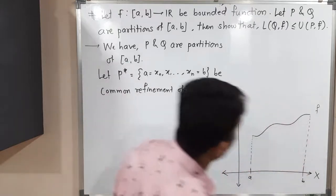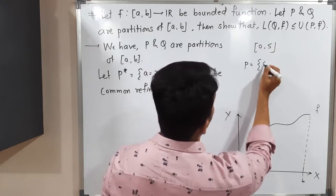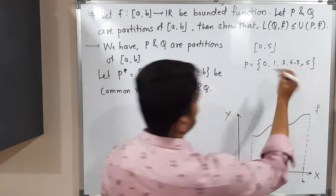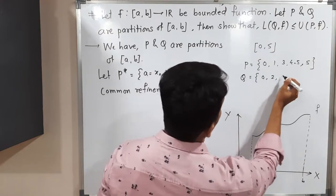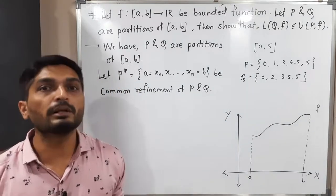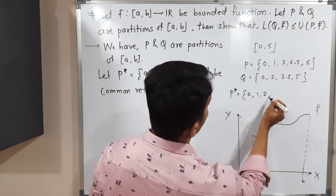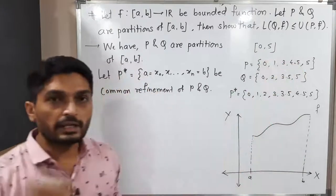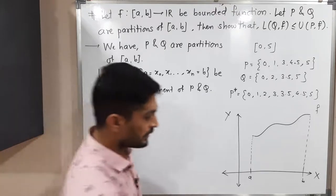Suppose we have a closed interval [0, 5]. Partition P = {0, 1, 3, 4.5, 5} and another partition Q = {0, 2, 3.5, 5} of the same interval. The common refinement P* = {0, 1, 2, 3, 3.5, 4.5, 5}, which covers all points from both partitions. Additional points can also be included. That is called the common refinement of P and Q.